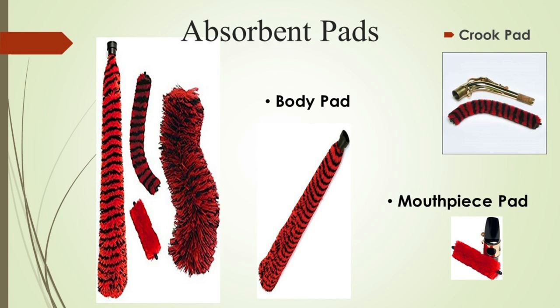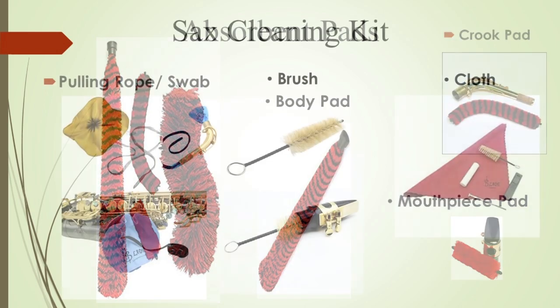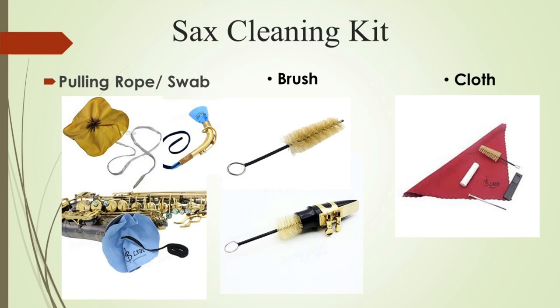Now we will learn about three different absorbent pads used in saxophone. First is the body pad, which absorbs all moisture that builds up after playing and keeps the leather pads inside the flaps clean and dry, while also preventing dust from entering inside the body. Second is the neck pad, which is used to clean the neck by inserting it from one side and pulling it out the other — it cleans all water accumulated inside and keeps the neck free from rust or dust.